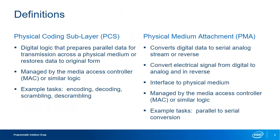The PCS is the digital portion of the physical layer. In the transmitter, its job is to prepare the parallel data for transmission across the physical medium in a way that the data can be recovered at the receiving device. Examples of transmitter functions include encoding or scrambling. In the receiver, the PCS returns the transmitted data back to its original form, including locating byte or word boundaries and decoding or descrambling the data stream. The PMA converts data between the parallel digital domain and the serial analog domain, and it may connect directly to the physical medium or to an optical transducer converting electrical signals to and from light.